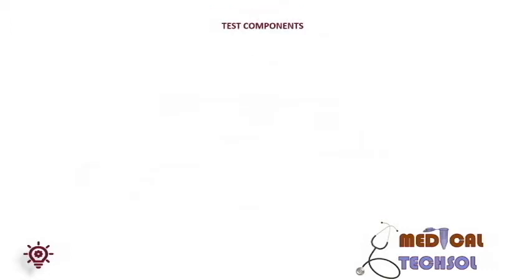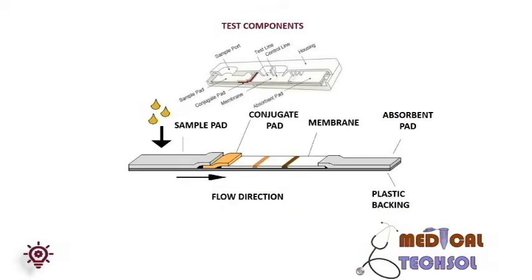The sample is added into the sample well of the cassette. It is absorbed by the sample pad. The sample migrates towards the conjugate pad by capillary action, combines with the conjugate, then moves towards the membrane and is immobilized on the test line and control line of the membrane, with the remainder absorbed by the absorbent pad.